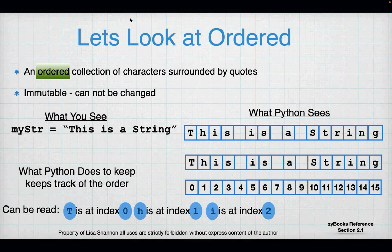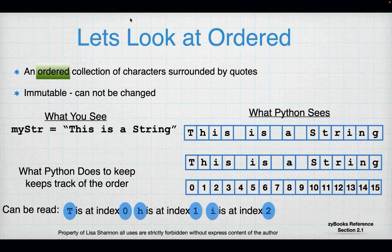Just like I said last week, we talk about writing programming languages but we don't talk about how to read them. This is how you read an ordered collection — you could say space is at index four. Every list in Python starts at zero, not one. So the capital T is at index zero, which is going to be interesting when you look at the length — for 'this is a string', it starts at index zero and ends at index 15, but there are 16 characters.